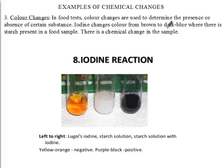The third example is color changes. We talked about food tests some weeks ago. We saw that food samples contain certain food components or food molecules, and these can be tested for. One of the tests we used was the iodine test. This iodine test is a reaction between the iodine and something specific in the starch.